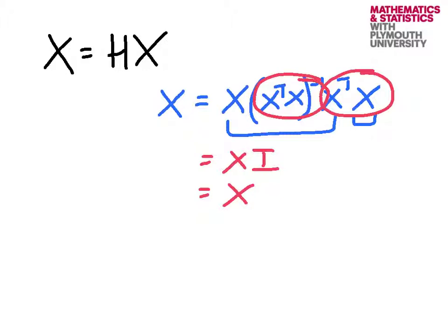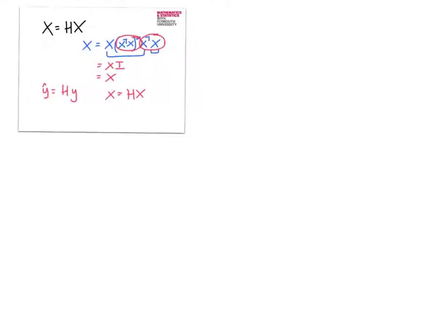We have the property that y hat is h multiplied by y. We have a property that x is the hat multiplied by x. And one of the other terms that we're interested in, in regression, are the residuals.